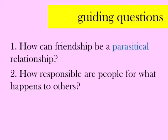Parasitical comes from the root word parasite, and it means someone who is benefiting from a relationship by harming someone else. This is those kinds of friendships where some people use others in the name of friendship, but in reality they're not really their friends — they're using them.